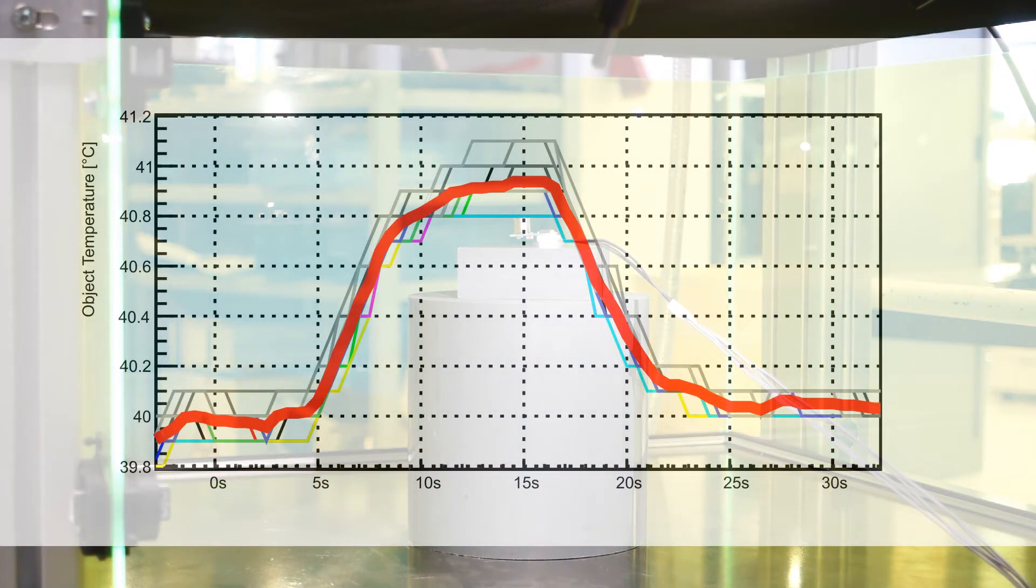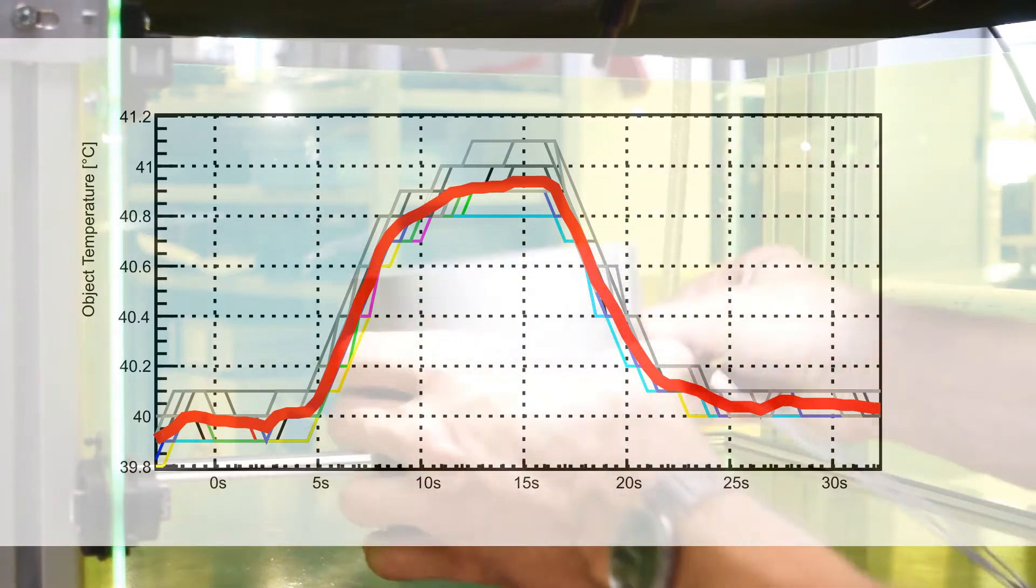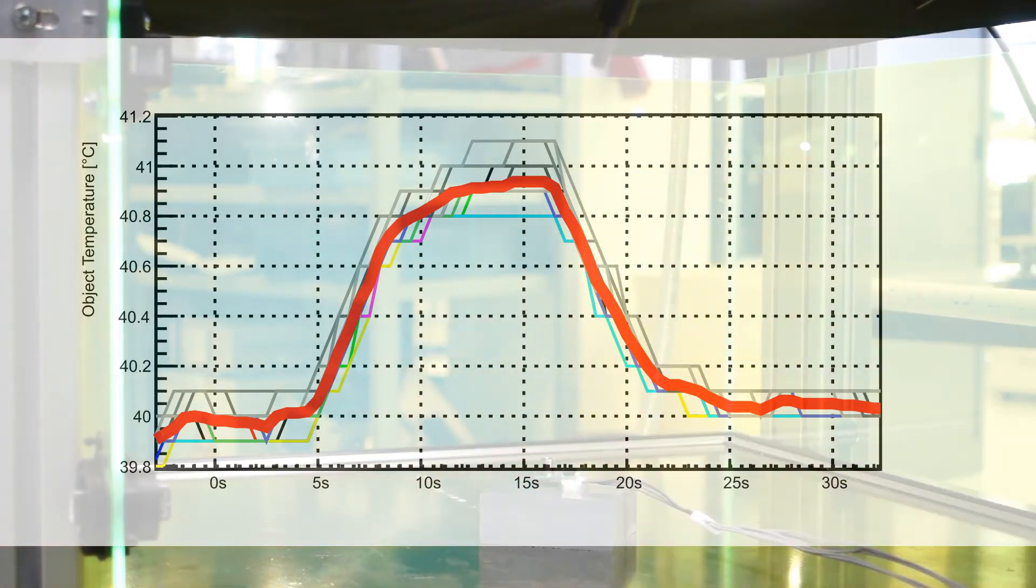The mean temperature over all pixels is shown here as a red line. It starts with a reading of 40 degrees C and increases to almost 41 degrees C when we reduce the distance to the blackbody.